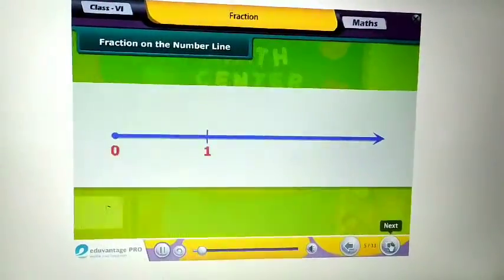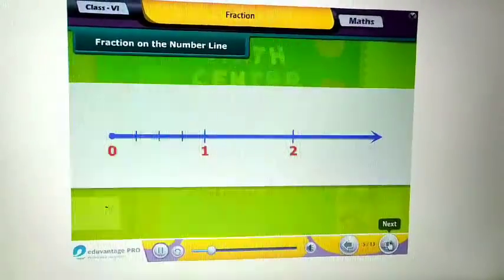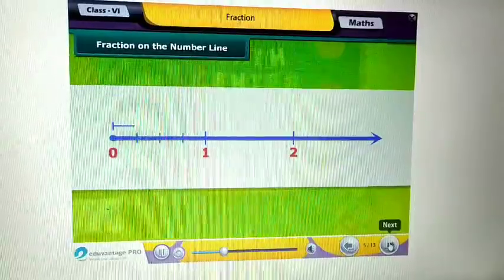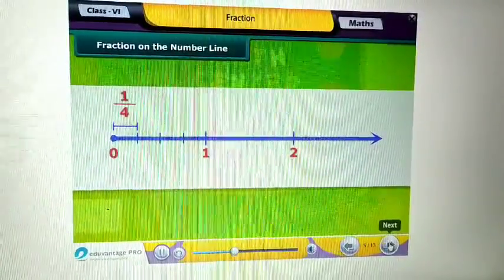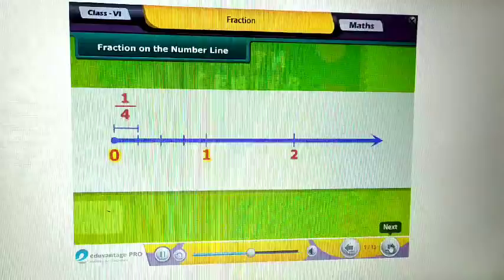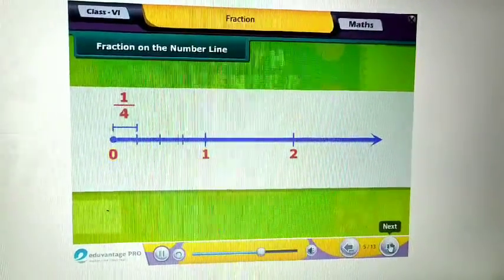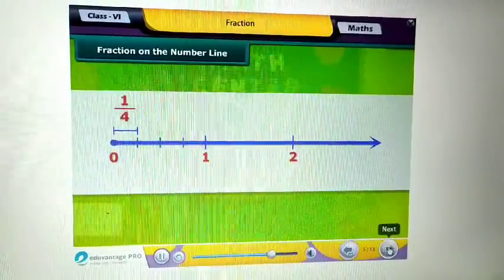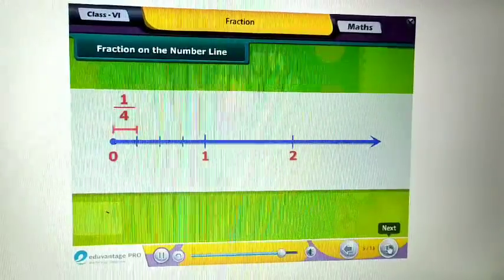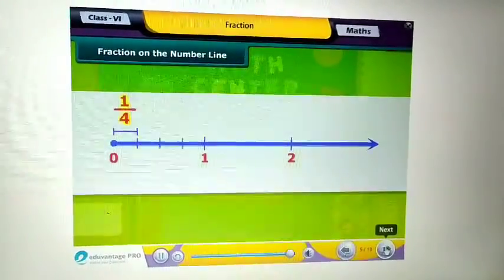Students, to represent the fraction on a number line, let us mark one upon four on a number line. It lies between zero and one. We divide the length between zero and one into four equal parts and show one part as one upon four.